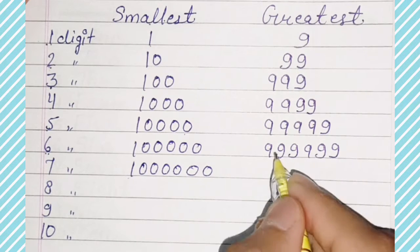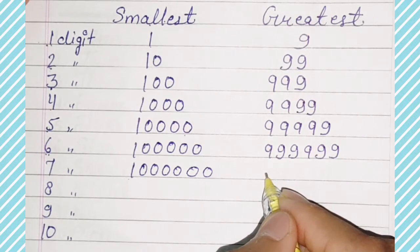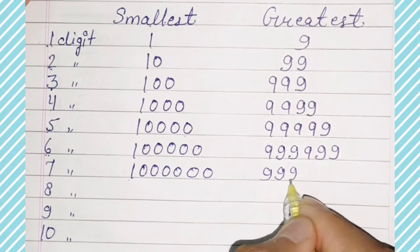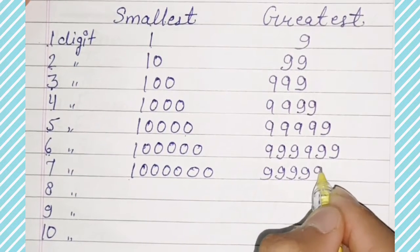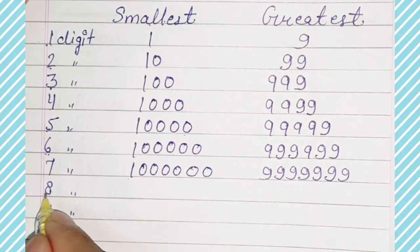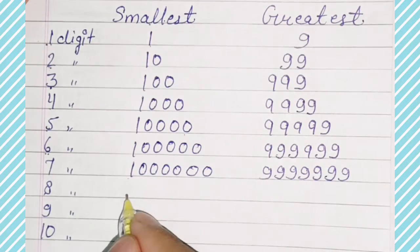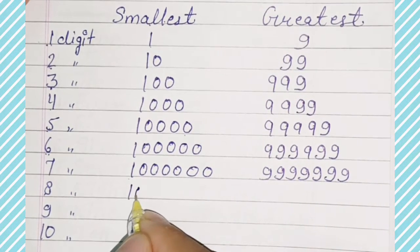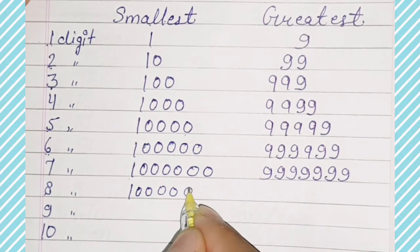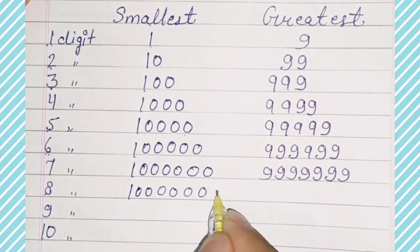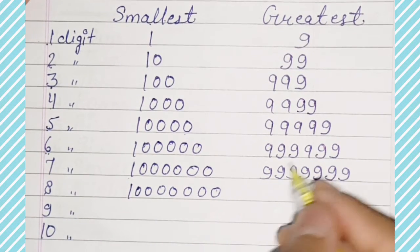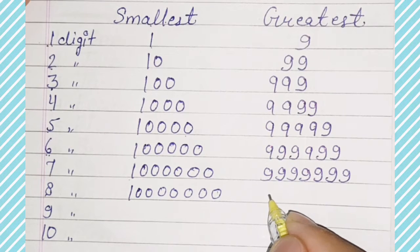7-digit greatest number is 9999999. 1, 2, 3, 4, 5, 6, 7. 8-digit smallest number is 10000000 and 8-digit greatest number is 99999999.